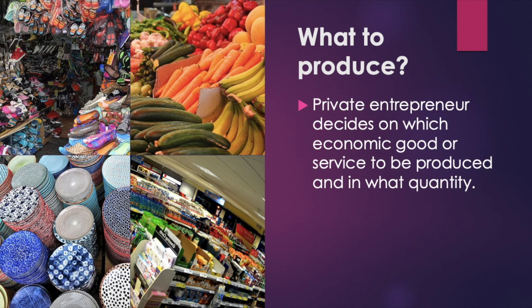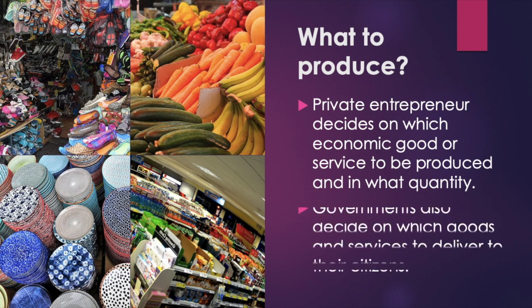For instance, entrepreneurs decide: do we invest in making clothes or shoes, or open up a restaurant or a school? And recall the three economic agents — not only firms are producers, but so are governments. Governments do provide us with some goods and services, such as healthcare, education, transit services, or law enforcement.